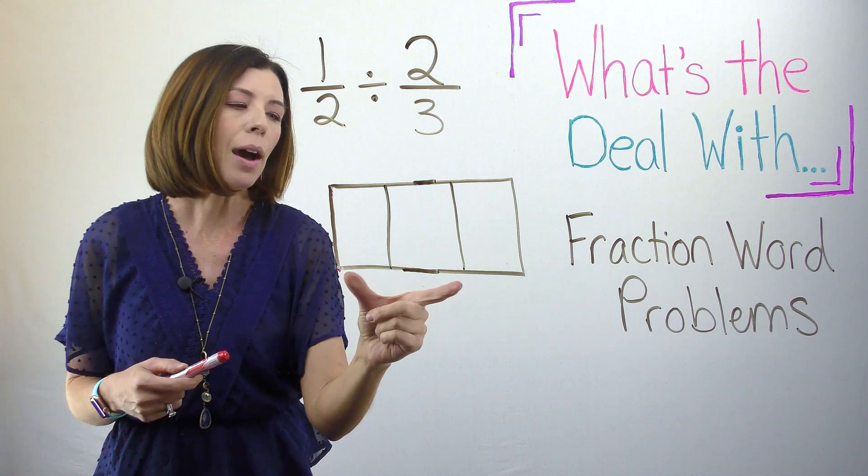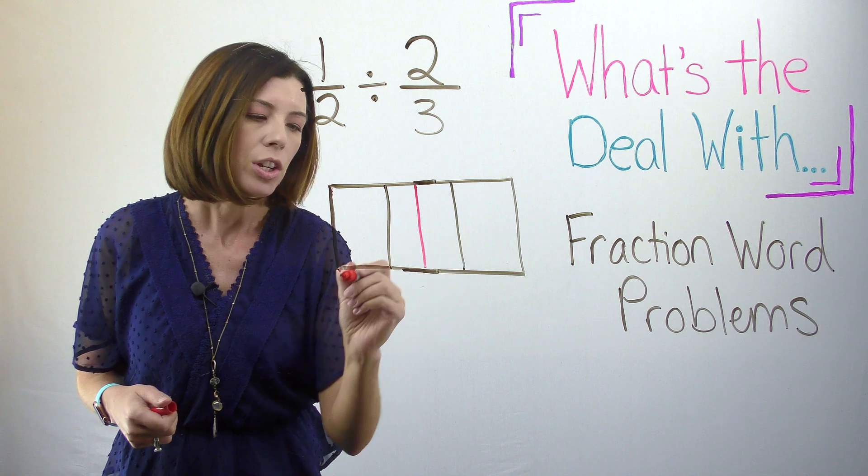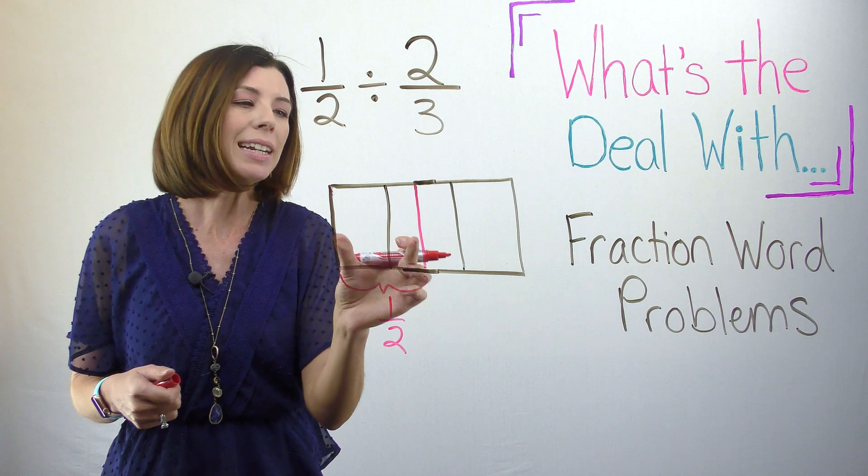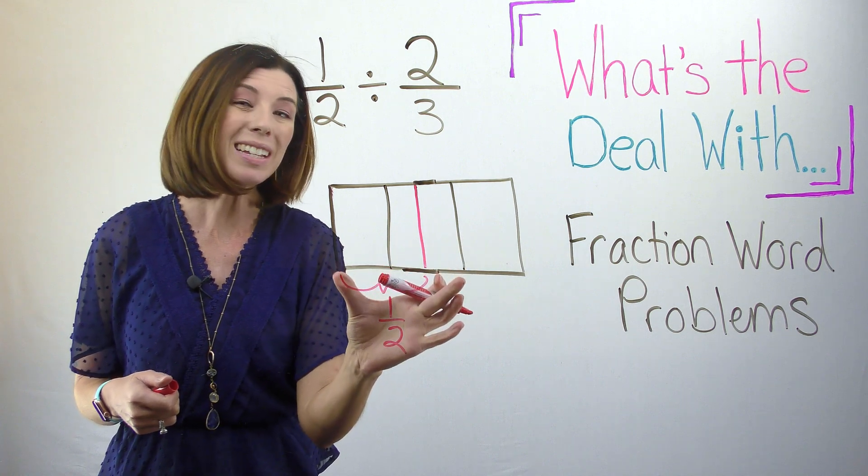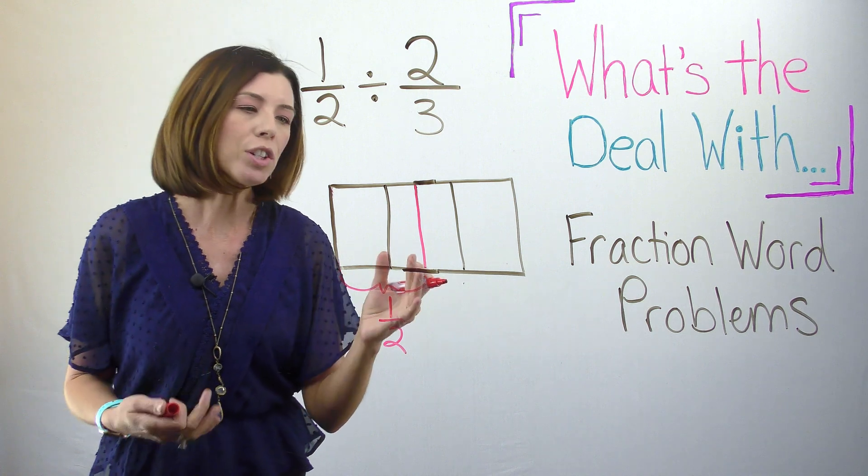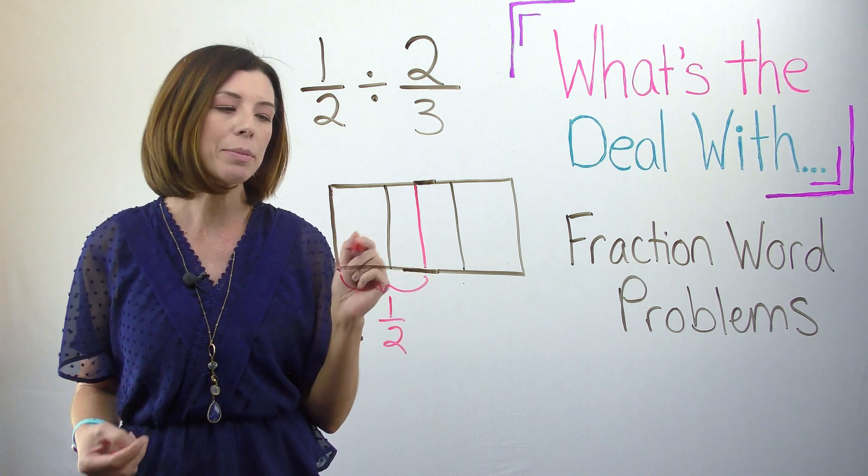And I'm really saying how many copies of two thirds are in one half. So here is my half, my butter that I already have. But I need to know how many of this bigger thing can fit into the smaller thing. So first of all, I know that this isn't going to work. I can't just eyeball it. I need to make them all the same size pieces.